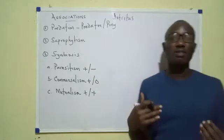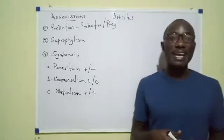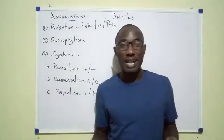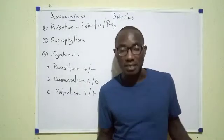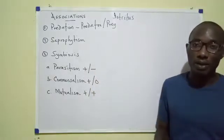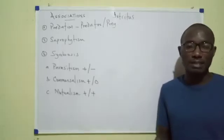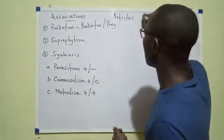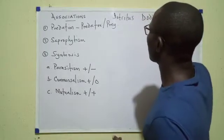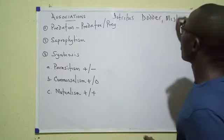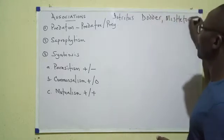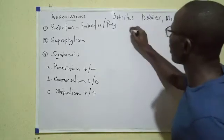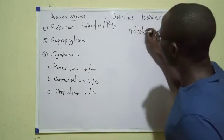Some parasites stay outside the body — we call them ectoparasites. Examples include leeches, mites, lice, and ticks. There are also plant ectoparasites — some plants are parasites. You have the dodder plant, mistletoe (also called lorantus), and witchweed, which are all examples of parasitic plants.